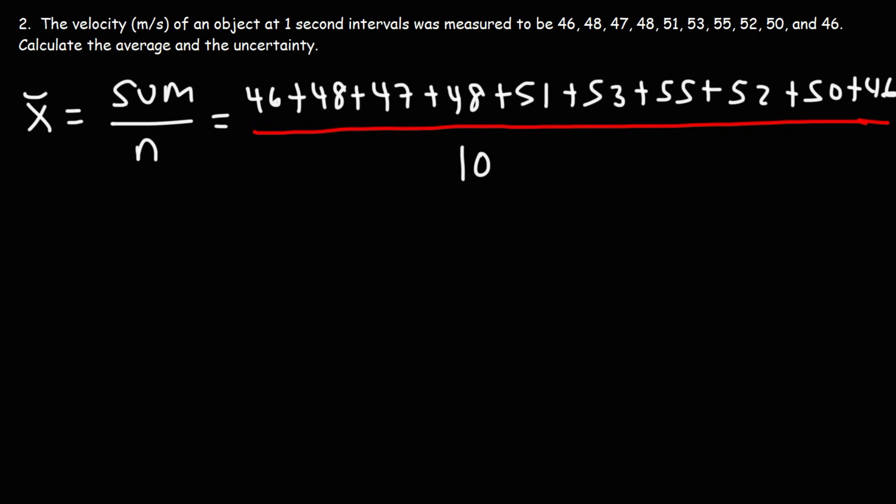Now let's plug this in. So 46 plus 48 plus 47 plus 48 plus 51 plus 53 plus 55 plus 52 plus 50 plus 46. So I got 496 as a sum. And when we divide that by 10, that's going to be 49.6. So that's the mean for this problem.